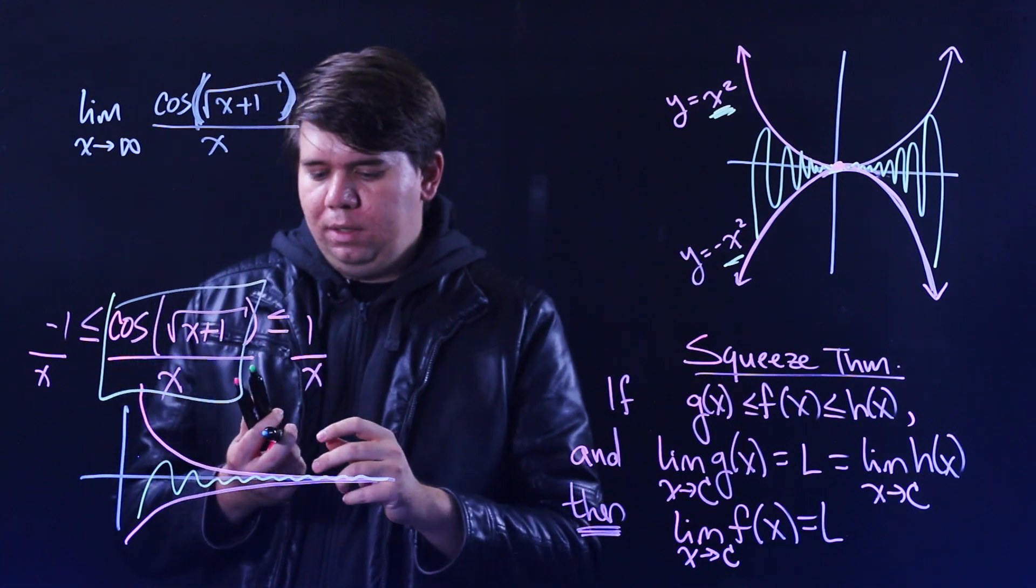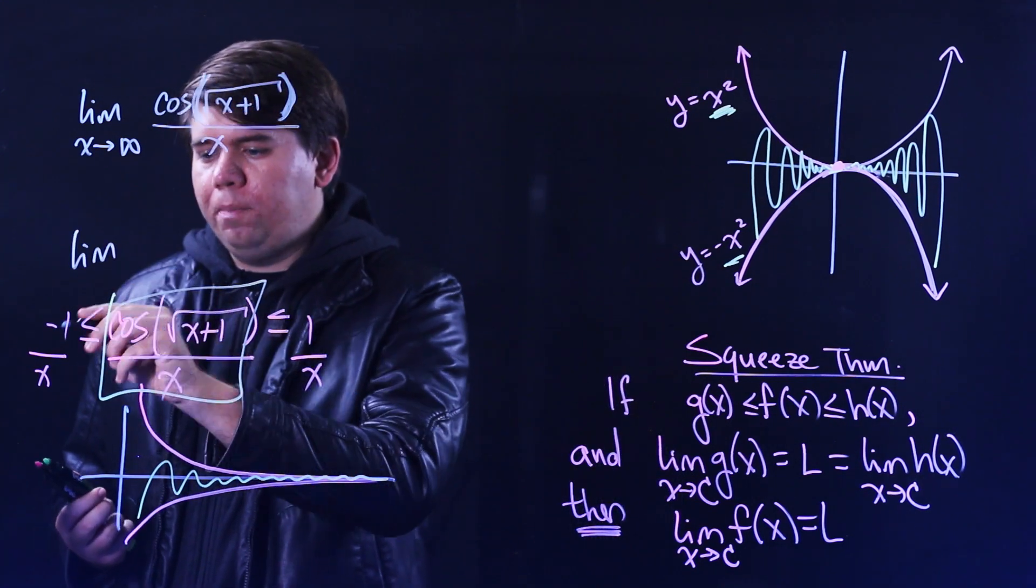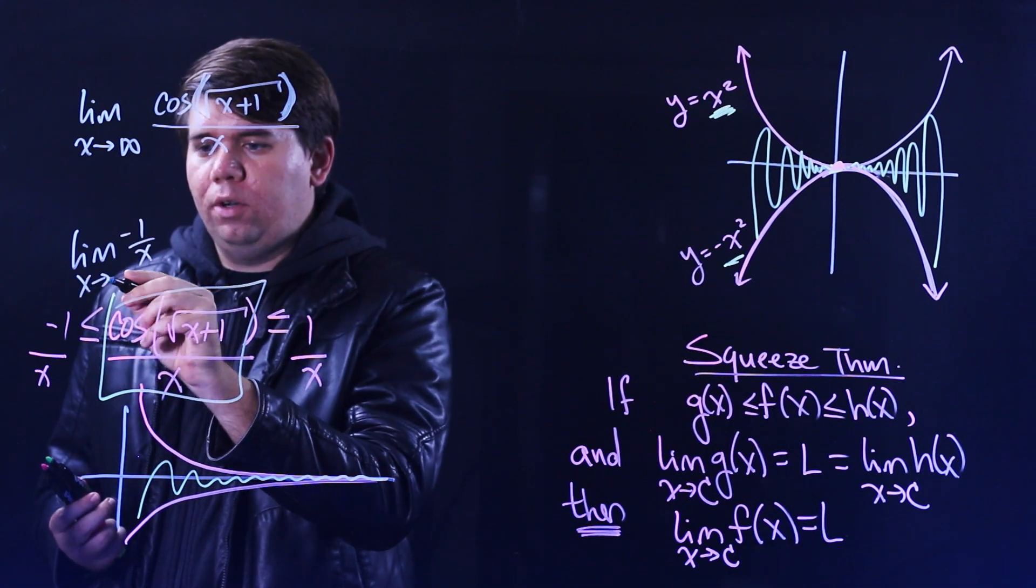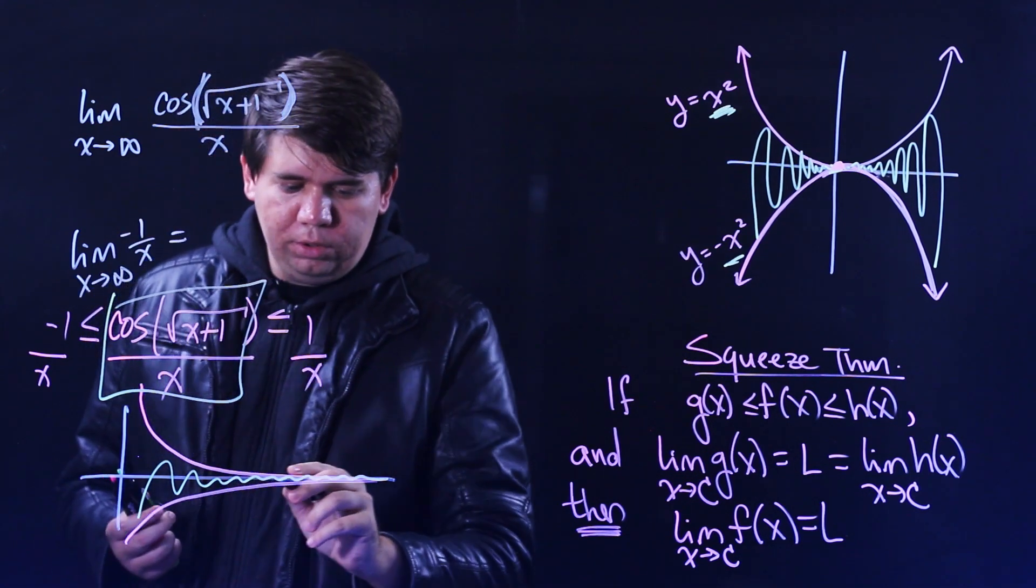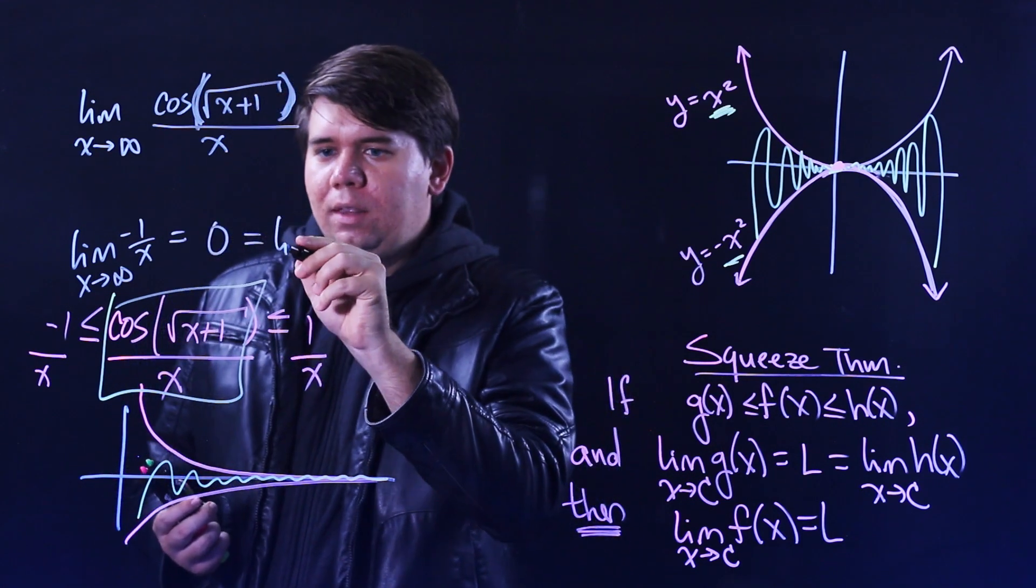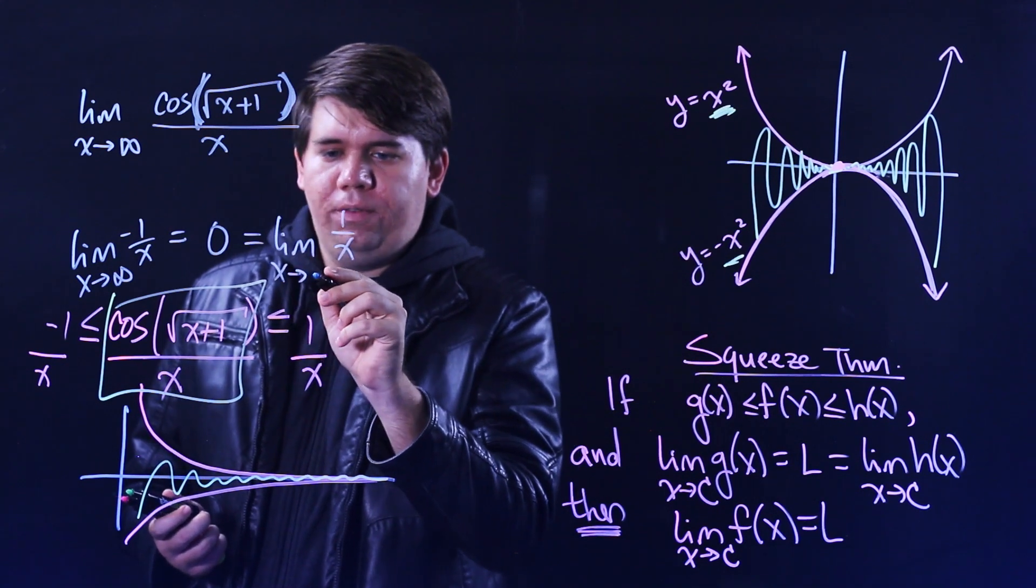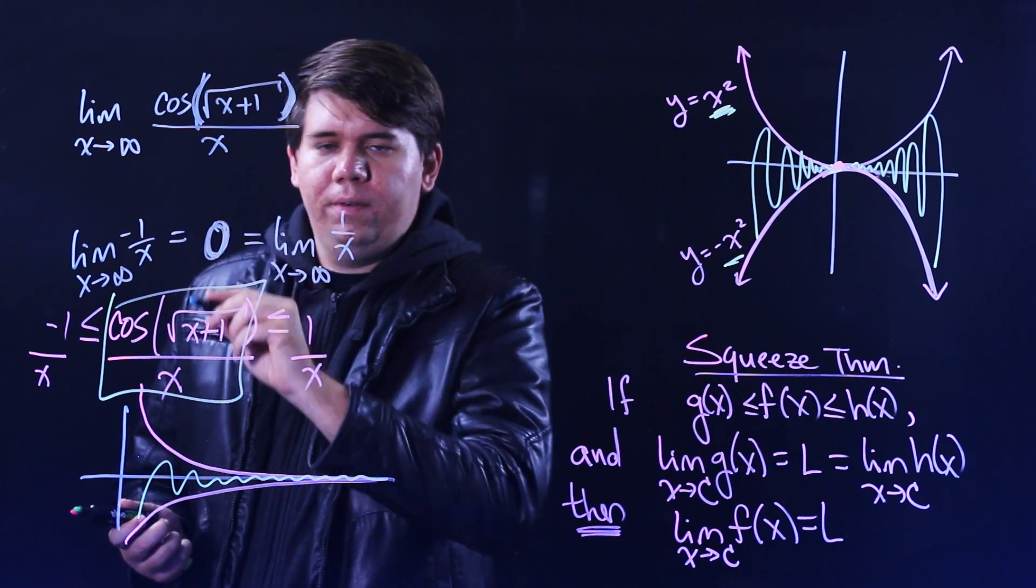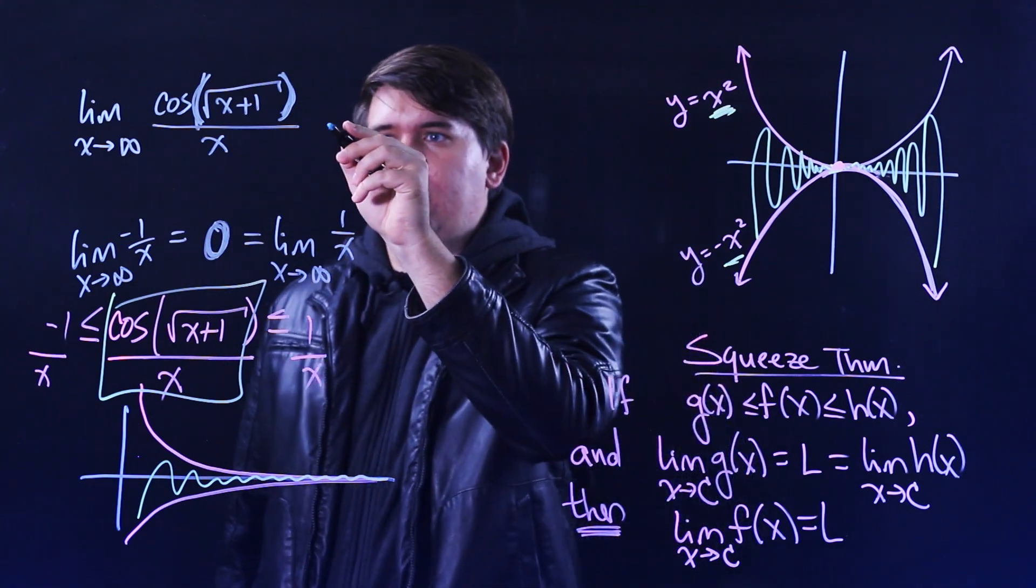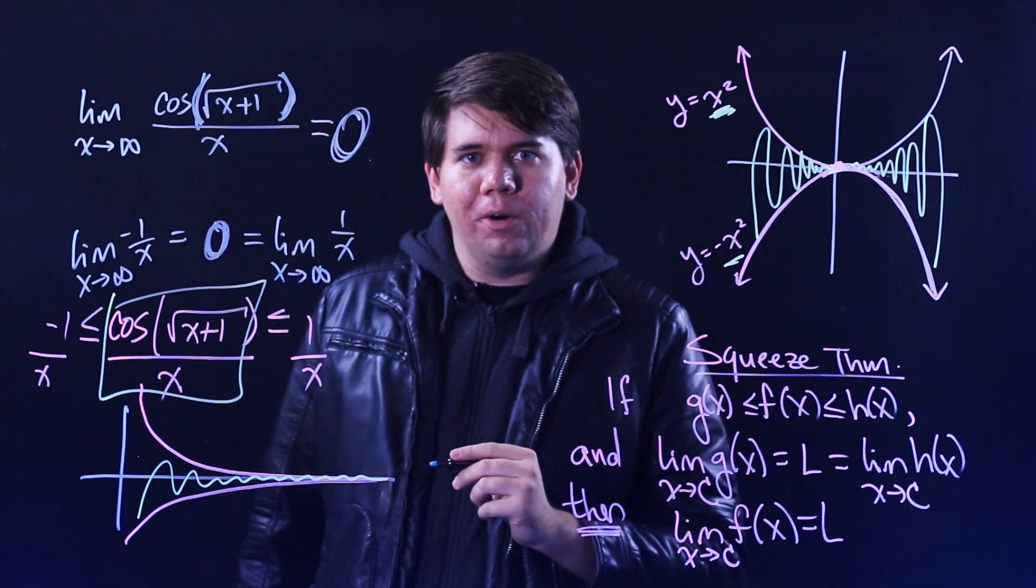But notice the limit of this lower limit, the limit of this lower bound, the limit of minus 1 over x as x goes to infinity. Well, that's getting closer and closer to zero, we said. And so is the limit of the upper bound. The limit of 1 over x as x goes off to infinity is going off to zero. Therefore, by the squeeze theorem, the overall limit will also be equal to zero.